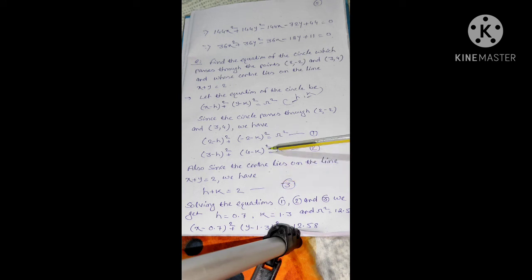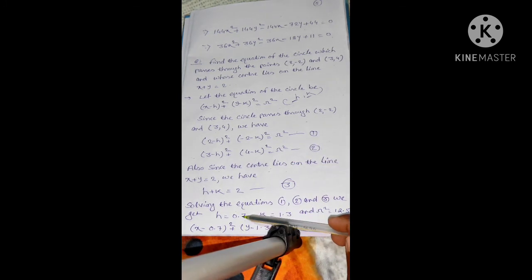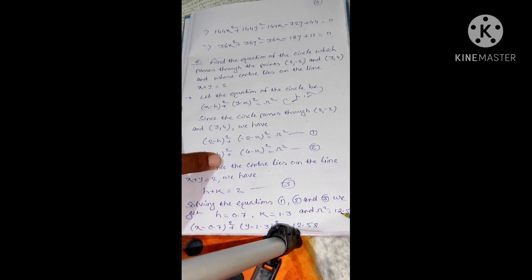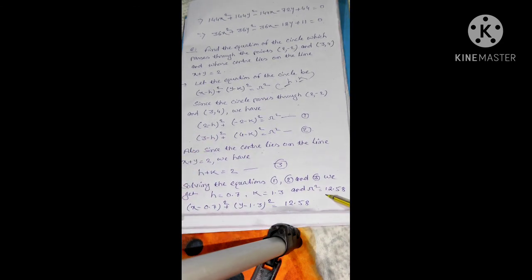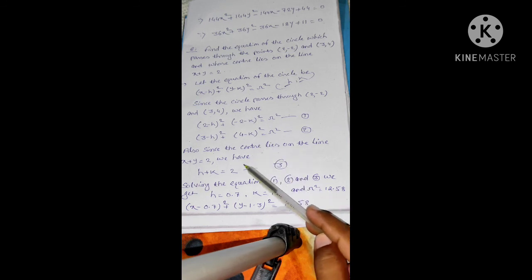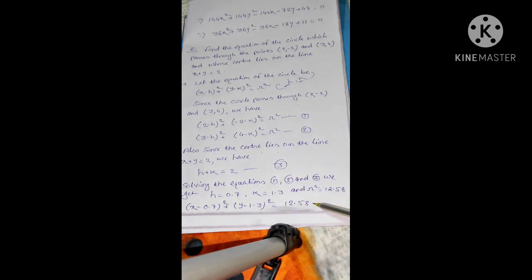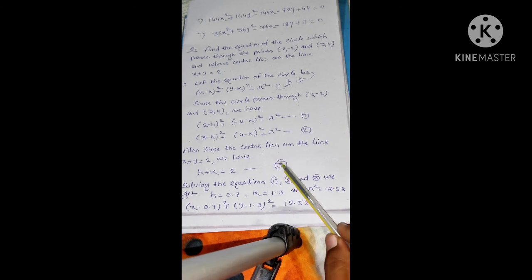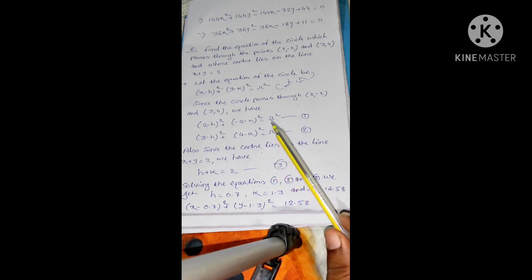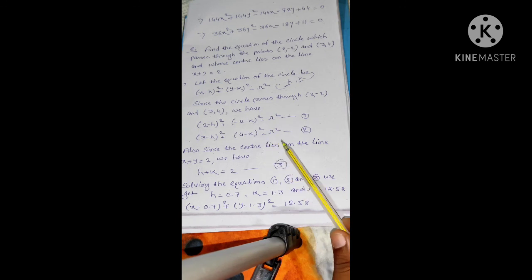Now we have to solve these three equations. After solving, we get h equals 0.7, k equals 1.3, and r squared equals 12.58. Putting the values of h, k, and r in the equation of the circle gives the required equation. This sum is very important for examinations. I hope the circle concept is very clear. For any related doubts, please give a comment and I will try to solve it. Thank you.